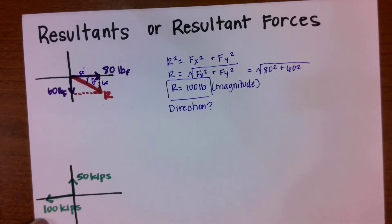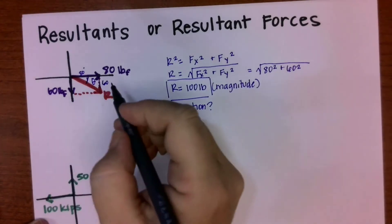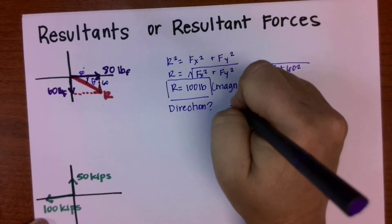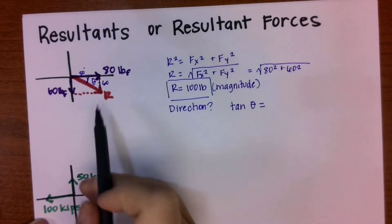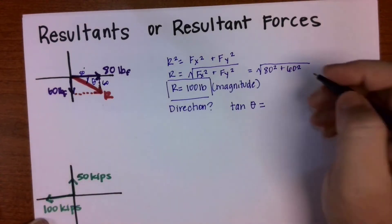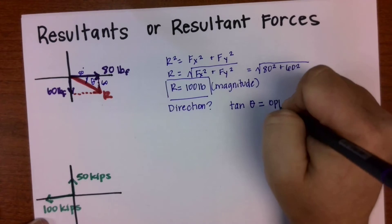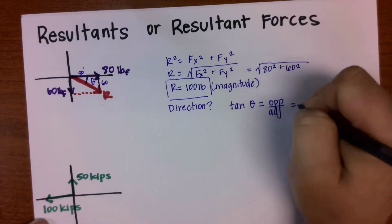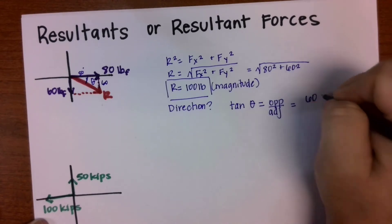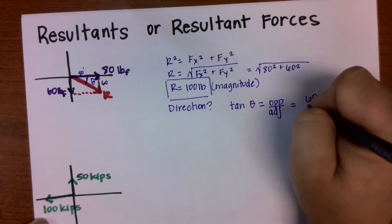We know two sides, we know the opposite of that angle and we know the adjacent. So tangent theta would be the opposite, which would be fy, and it would be adjacent, which would be fx. So it's going to be 60 over 80.